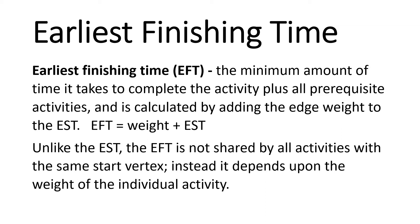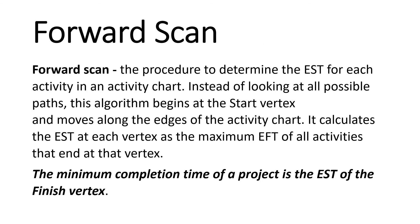Hopefully all of this will make sense once we do some examples. A forward scan is the procedure to determine the earliest starting time for each activity in an activity chart. Instead of looking at all possible paths, this algorithm begins at the start vertex and moves along the edges of the activity chart. It calculates the earliest starting time at each vertex as the maximum earliest finishing time of all activities that end at that vertex, taking into account how much time must pass before you can start a certain activity. The minimum completion time of a project is the earliest starting time of the finished vertex.